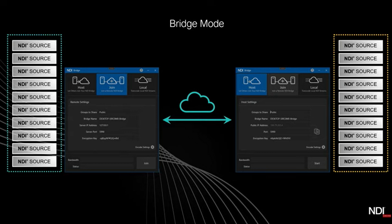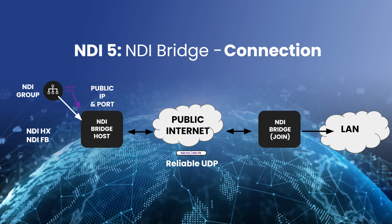The NDI sources are bi-directional: if the join side is using one of the NDI sources, tally lights will work, PTZ control will work, and if you're using a screen capture you can enable KVM control from the far end. You can take an entire group of video sources — created via NDI Access Manager — and tell NDI Bridge to make that whole group available to the far end over the public IP and port.